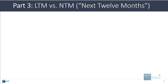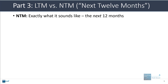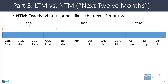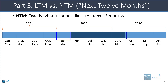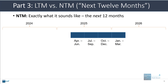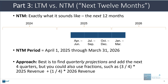In terms of LTM versus NTM metrics, NTM is exactly what it sounds like: the next 12 months as of the current date. Going back to our 2024-2025-2026 example, since only Q1 of 2025 has passed, the next 12 months would be Q2, Q3, Q4 of this year, and then Q1 of next year. The ideal way to do this is to find an equity research report that forecasts on a quarterly basis and simply add up those individual quarters to get the next 12 months figures.